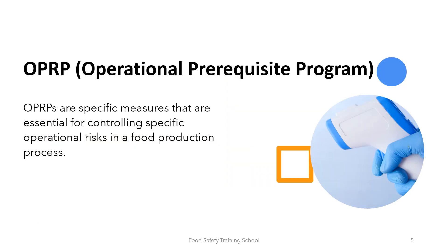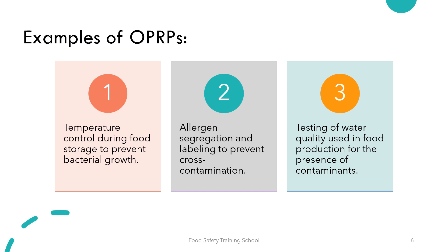OPRPs or operational prerequisite programs are specific measures that are essential for controlling specific operational risks in a food production process. They are situated between PRPs and CCPs in terms of criticality. OPRPs address significant risks that cannot be managed through PRPs alone but do not reach the level of being a critical control point. Some examples of OPRPs are temperature control during food storage to prevent bacterial growth, allergen segregation and labeling to prevent cross-contamination, and testing of water quality used in food production for the presence of contaminants.